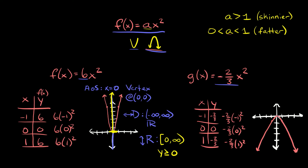Our vertex is always going to be at the origin at 0, 0. The axis of symmetry is still running right through the vertex, so it's still at x = 0. For the domain, it's still the same — all real numbers for all parabolas. For the range, it's a little different: our limits go from 0 down to negative infinity. So the range goes from 0 to negative infinity — including 0 — or we could say y is less than or equal to 0.